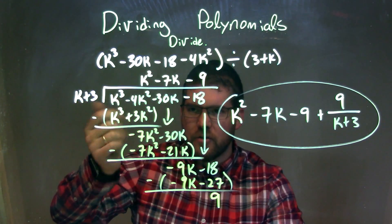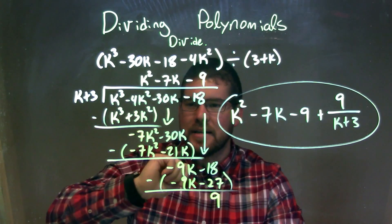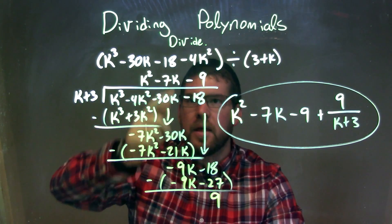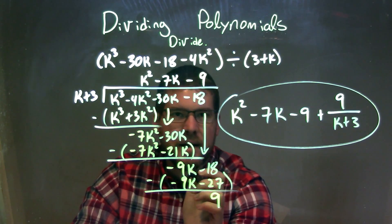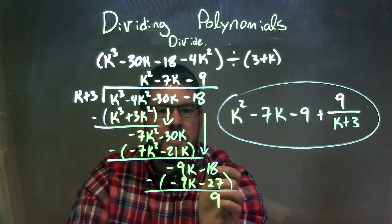Brought the minus 30k. Same question again. What times k give me minus 7k squared? That's a minus 7k. Multiply minus 7k to both parts. And then I subtracted them, giving me a minus 9k. Brought down the minus 18. Same thing again.